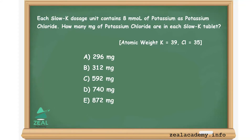Each Slow Potassium dosage unit contains 8 millimoles of potassium as potassium chloride. How many milligrams of potassium chloride are in each Slow Potassium tablet? The atomic weight of potassium is 39 and chlorine is 35. The options are: A) 296 mg, B) 312 mg, C) 592 mg, D) 740 mg, and E) 872 mg.